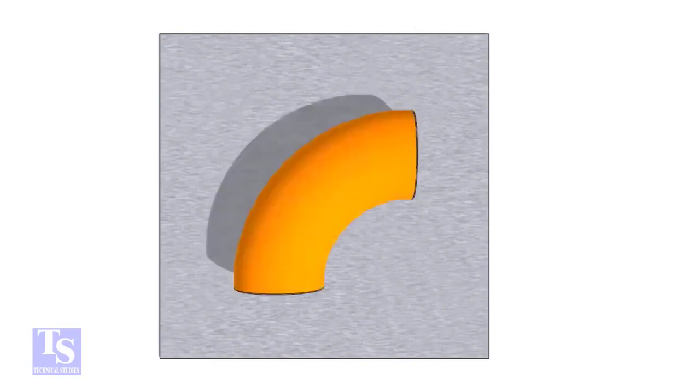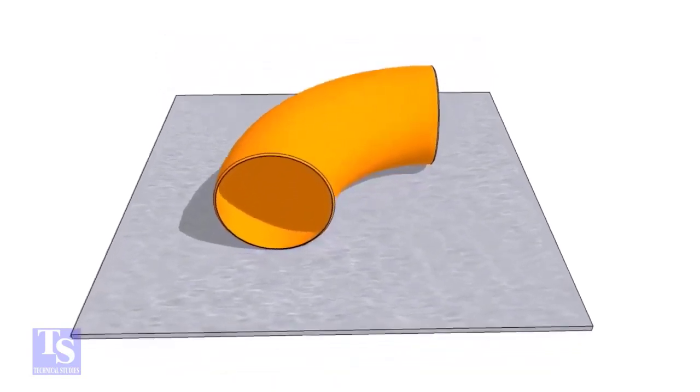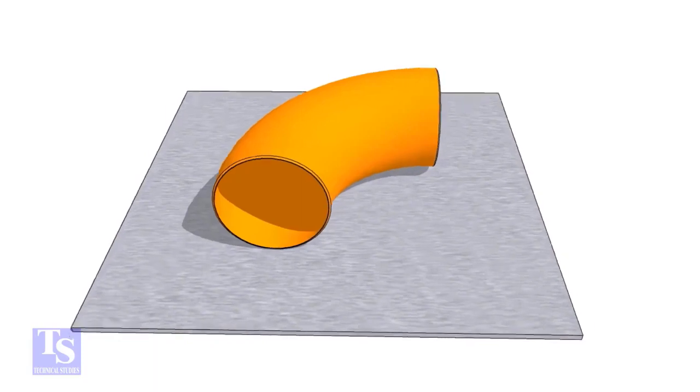First of all, choose a leveled plate and put the elbow on it. Check the outer diameter of the elbow.